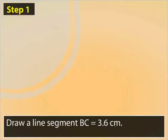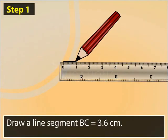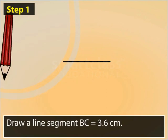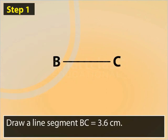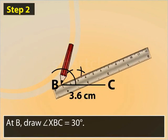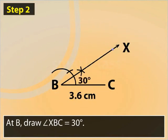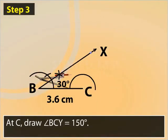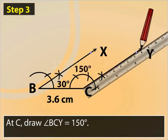Let us now start the construction. First, draw a line segment BC equal to 3.6 cm. At B, draw an angle XBC equal to 30 degrees. At C, draw an angle BCY equal to 150 degrees.